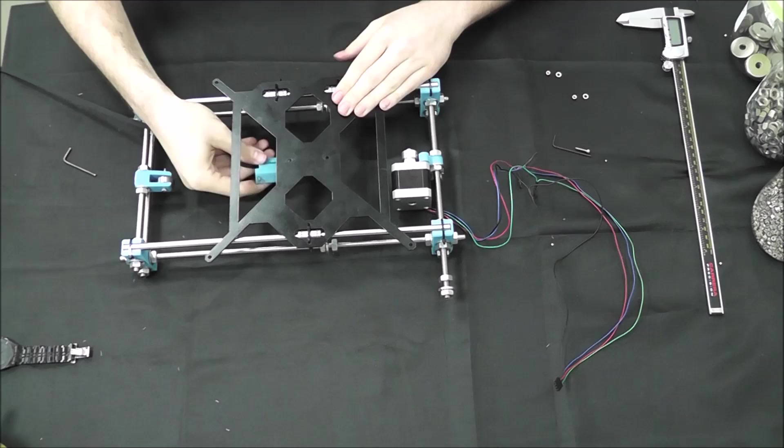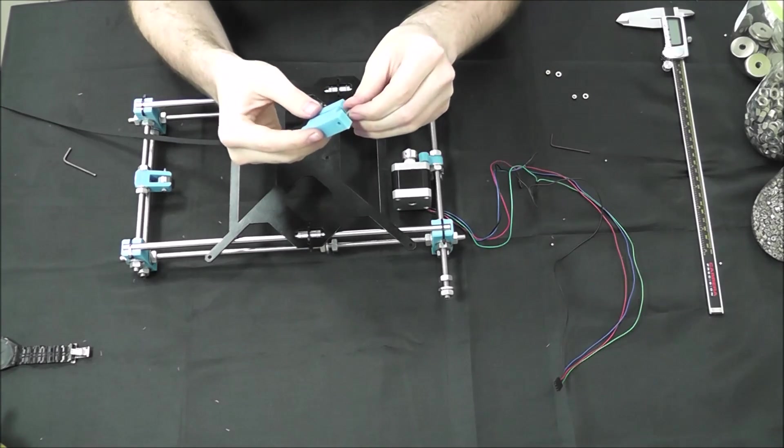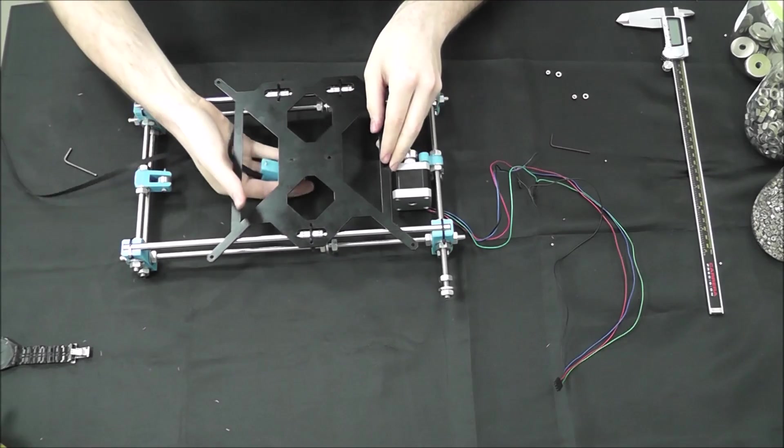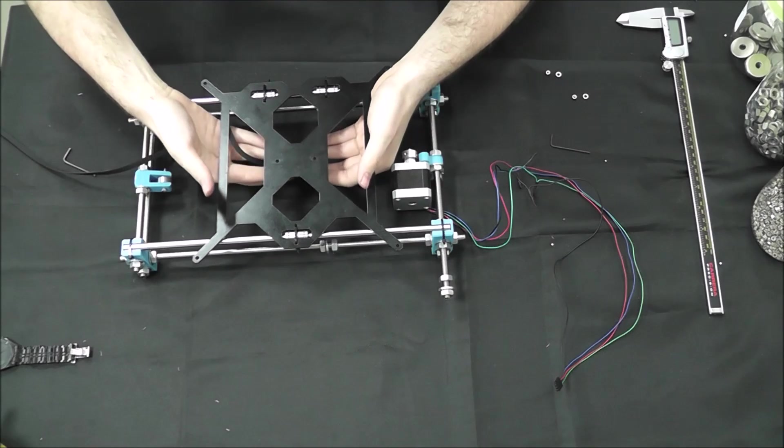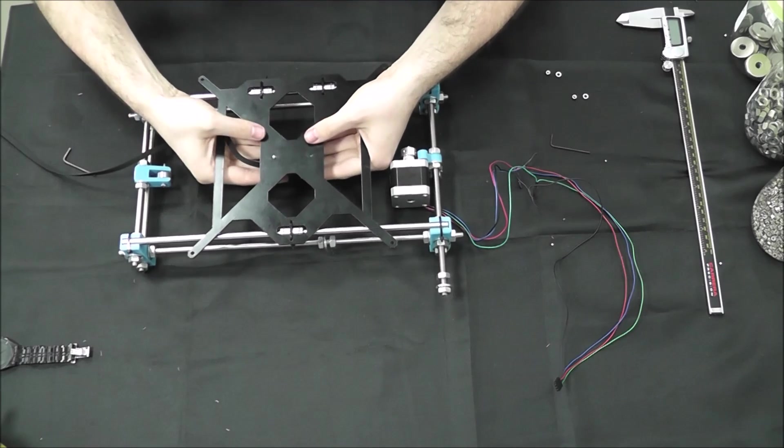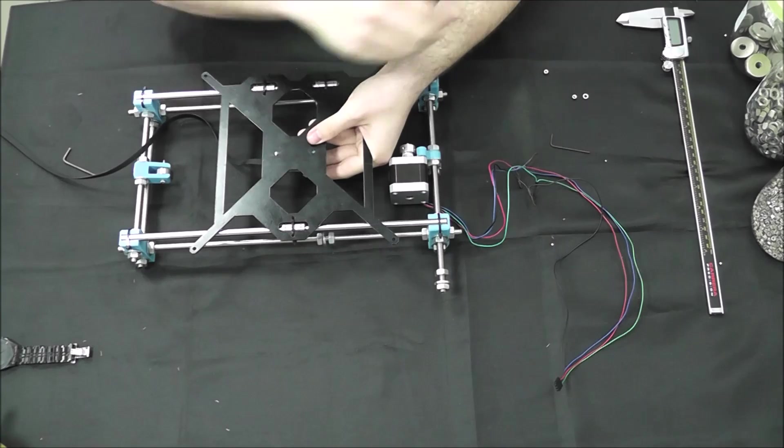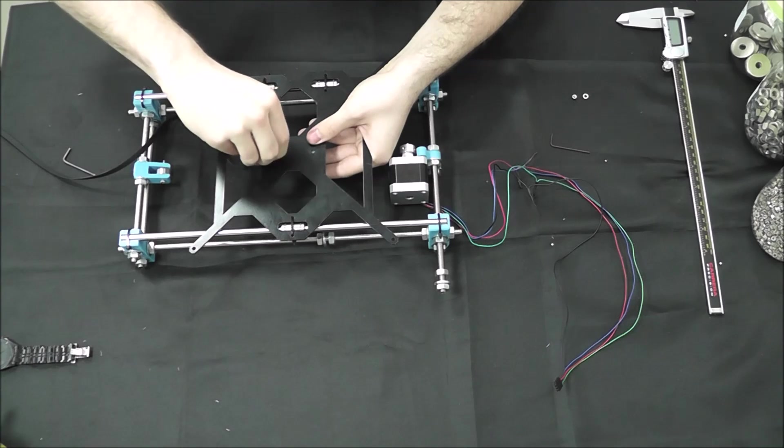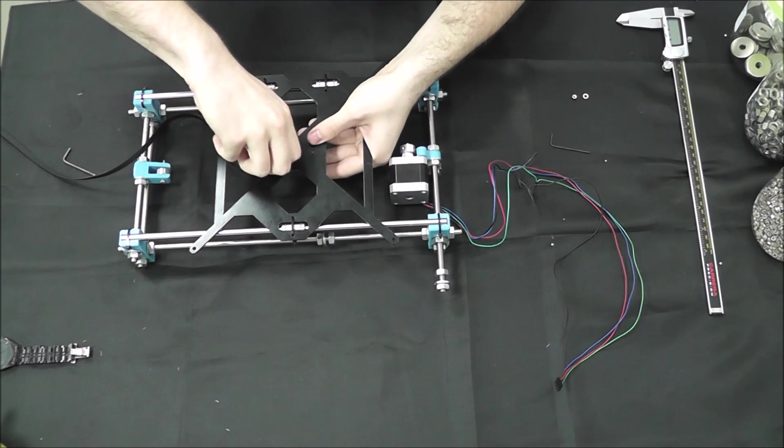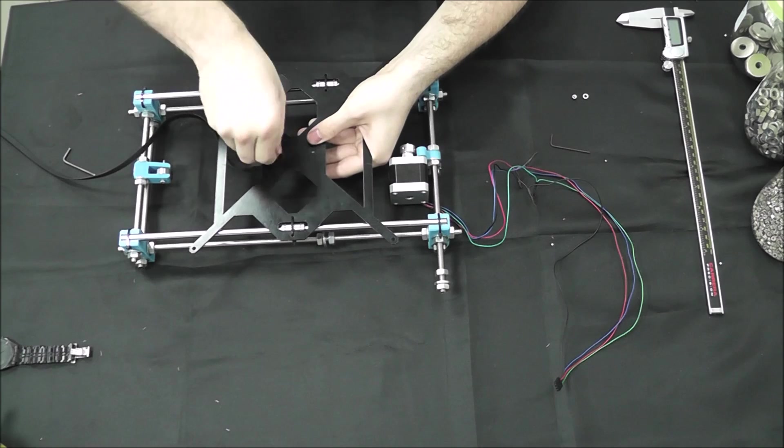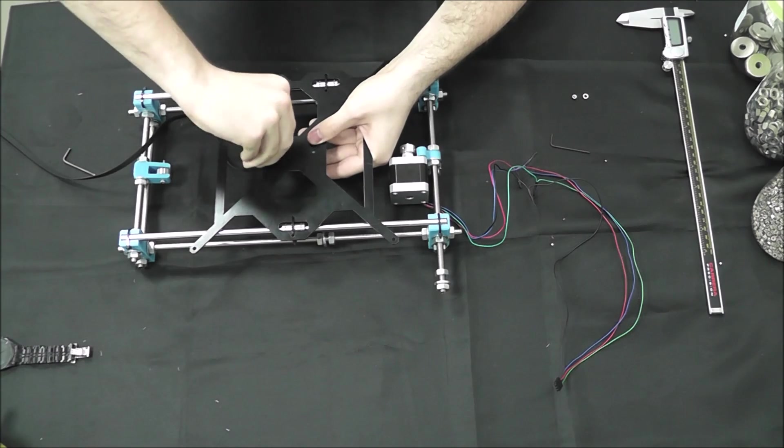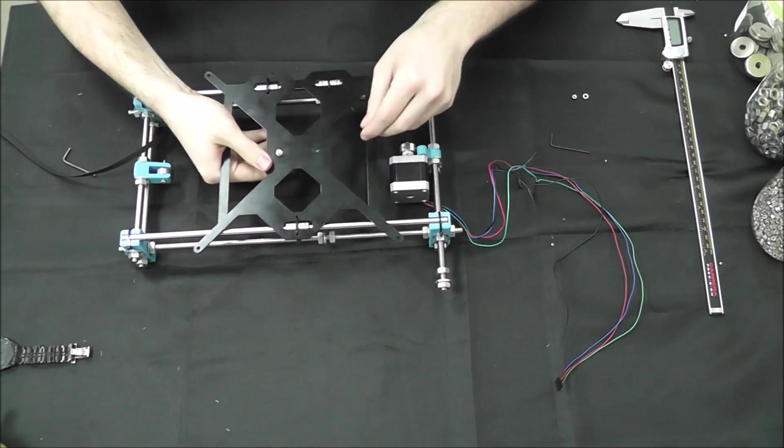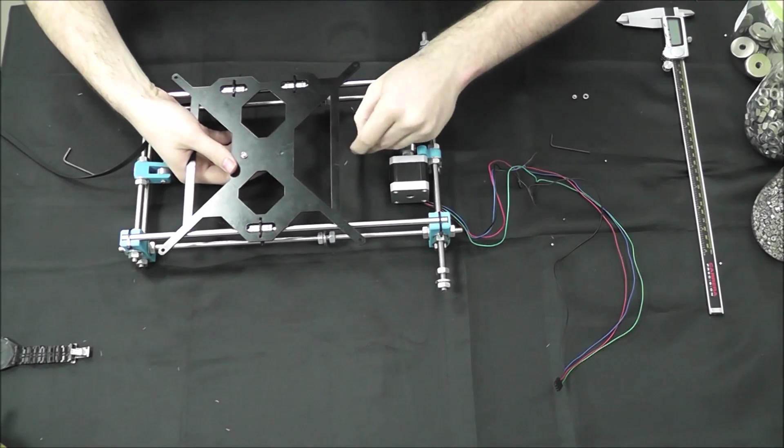So right now we're going to go ahead and put our two M3 15 millimeter bolts through there and mount it to our bed frame. This is going to hold it still while we mess with the belt. So you're going to put your washer, your nut, and tighten them on there. They're not going to be perfectly tight right now, just tight enough so it doesn't fall.